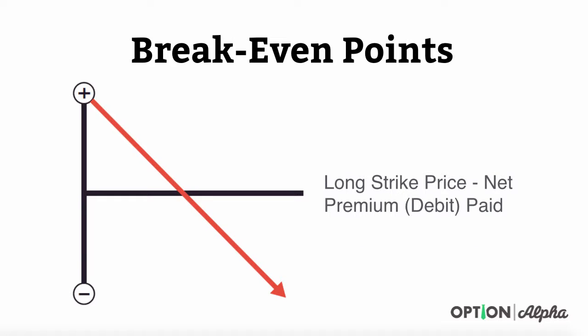Breakeven points are pretty easy to calculate with this trade. You basically take the long strike price and subtract out the debit that you paid. If you received a credit, you would take the long strike price plus the credit that you received in doing the strategy.